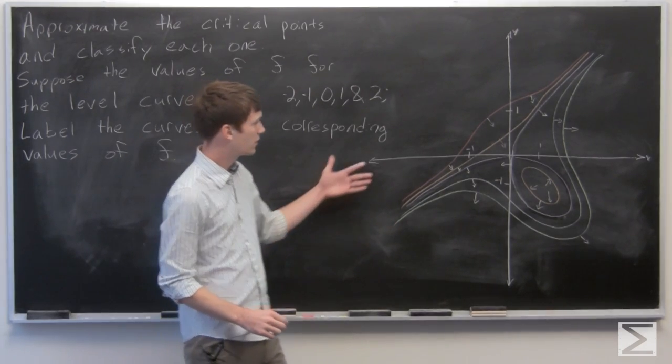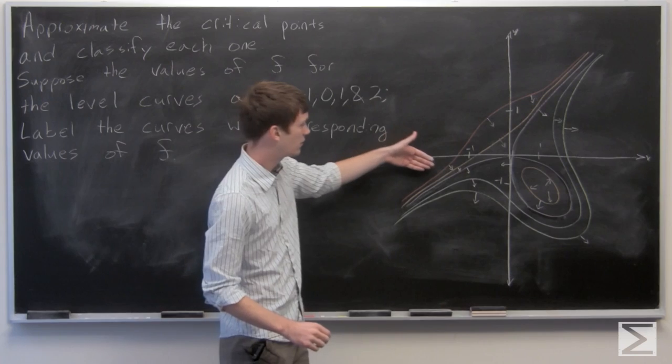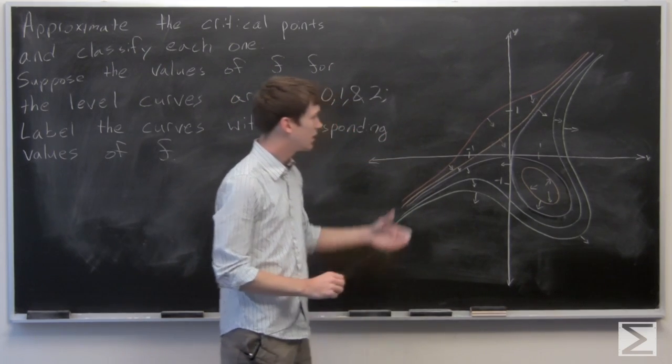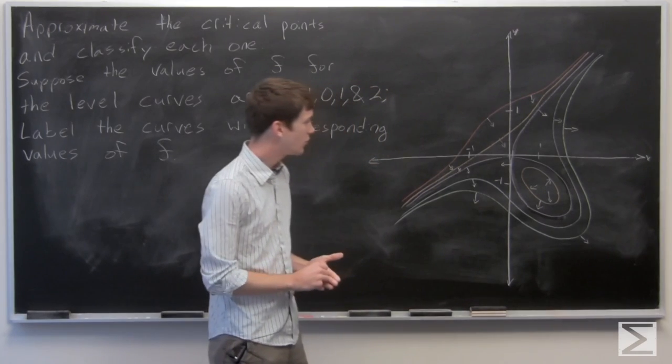label the curves with the corresponding values of f. So we're given our function, we're given level sets with scaled gradient vectors, and we want to first identify the critical points.